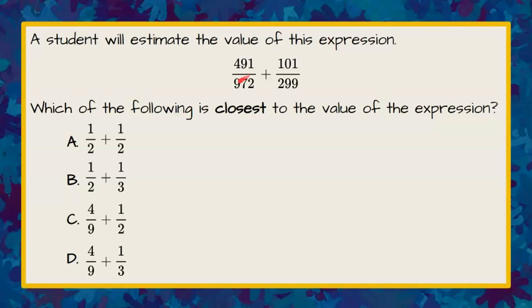Here's our question. A student will estimate the value of this expression, 491 over 972, plus 101 over 299.